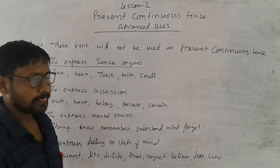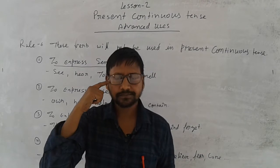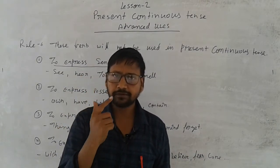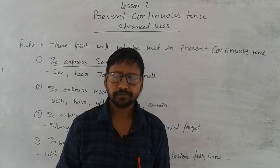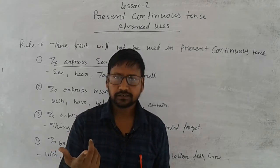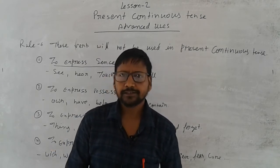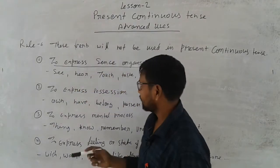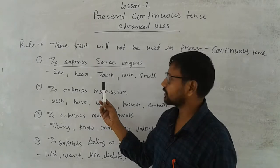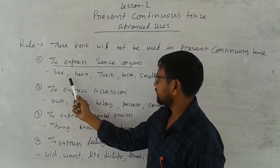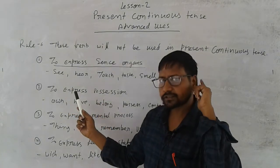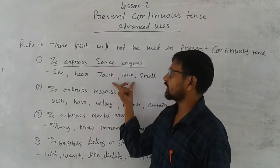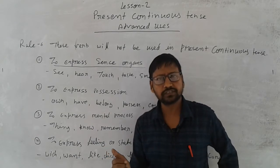Sense organs means whatever we use to sense. For example, we can see with our eyes — that is sense organ number one. We can smell with our nose — that is the second. We can taste using our tongue. If you look at the board, you can see: see, hear, touch, taste, and smell. These verbs are not used in the present continuous tense.